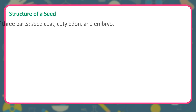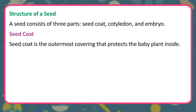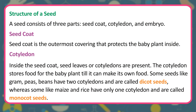Structure of a seed: A seed consists of three parts — seed coat, cotyledon, and embryo. The seed coat is the outermost covering that protects the baby plant inside. Inside the seed coat, seed leaves or cotyledons are present. The cotyledon stores food for the baby plant till it can make its own food. Some seeds like gram, peas, and beans have two cotyledons and are called dicot seeds, whereas some like maize and rice have only one cotyledon and are called monocot seeds.